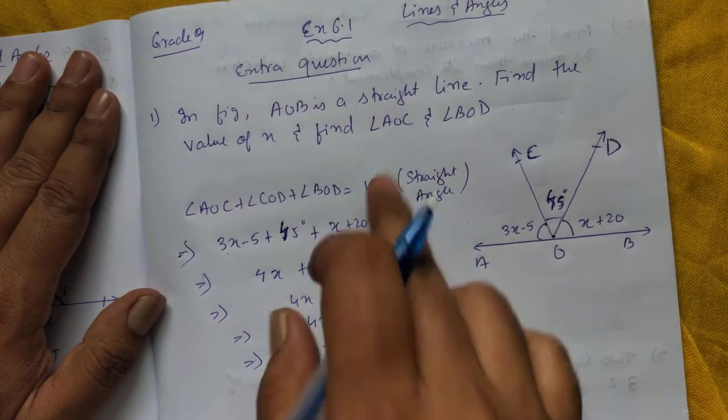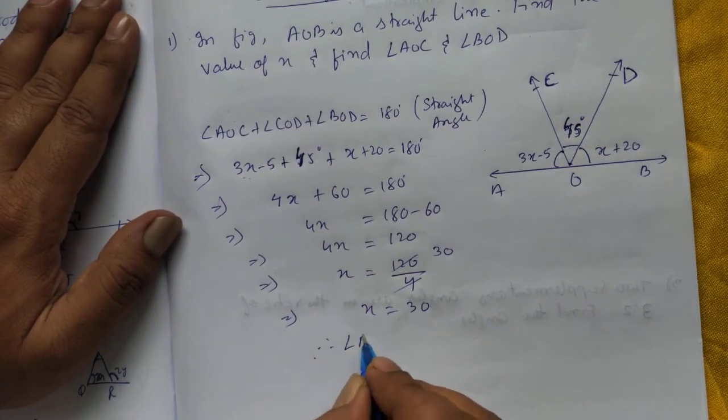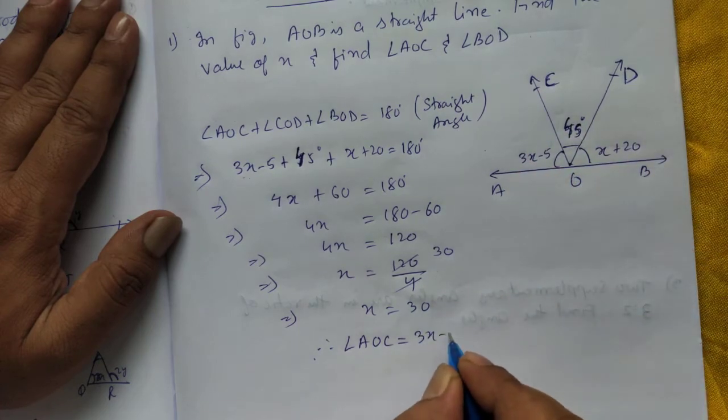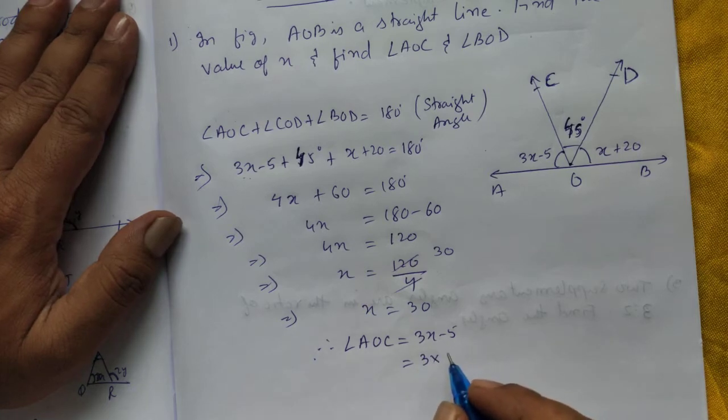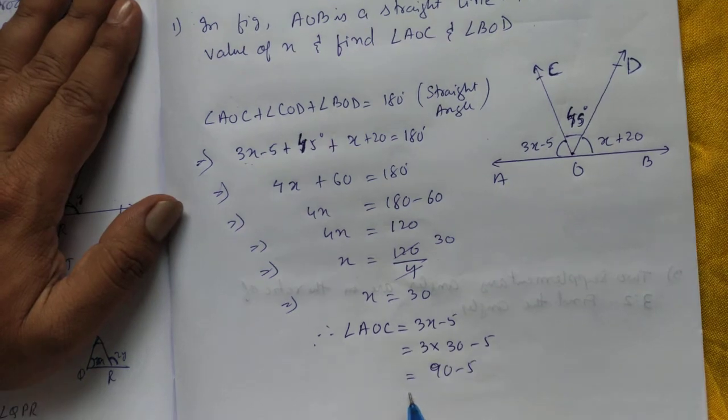Now we are going to find angle AOC. Therefore, angle AOC will be, AOC is 3X minus 5. Put the value, 3 into X is how much? X we got 30 minus 5. First multiply, we will get 90 minus 5 is 85 degrees.